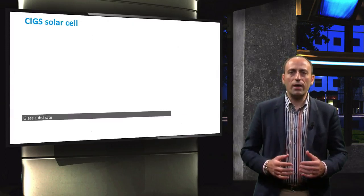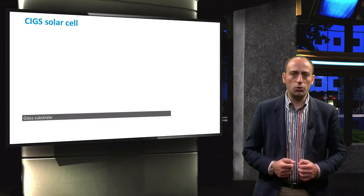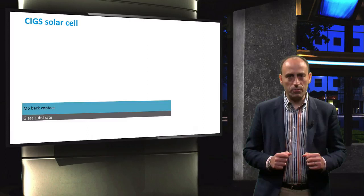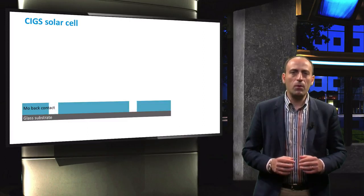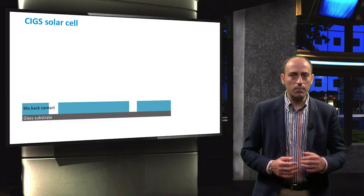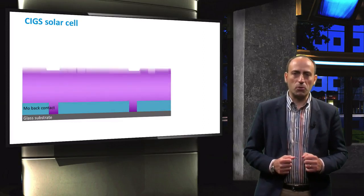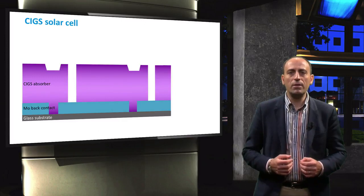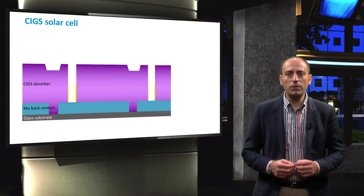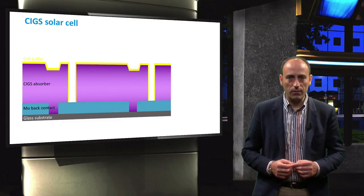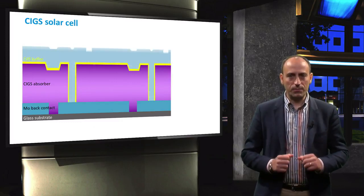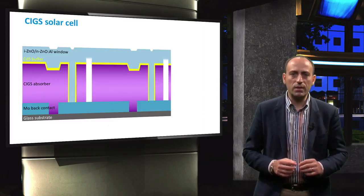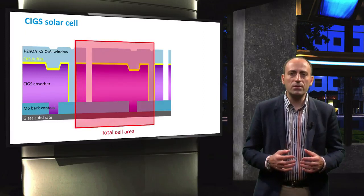Let's look also at the fabrication of a thin film CIGS module. First, the molybdenum back contact is deposited on top of the glass substrate. After the P1 laser scribe creates gaps in the back contact, the CIGS P-doped layer is deposited. The deposition of the CIGS absorber is followed by the P2 laser scribe and the deposition of the cadmium sulfide N-doped layer. The front TCO is deposited last.